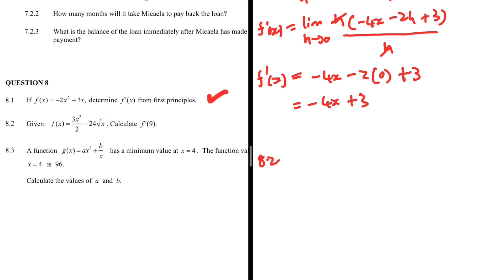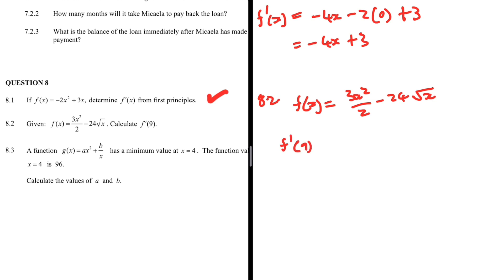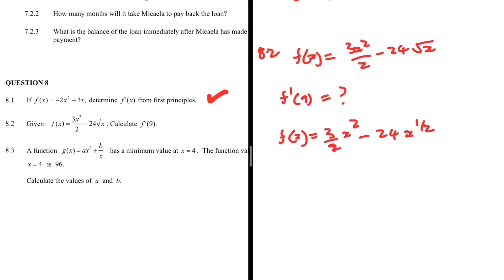Question 8.2: we are given f(x) = (3x²/2) - 24√x, and we need to find f prime of 9. We'll differentiate first, then substitute x = 9. Before differentiating, let's rewrite f(x) to allow use of the power rule. The term 3x²/2 has no issue, but we rewrite -24√x as -24x^(1/2), since square root is the same as raising to the power of one-half.